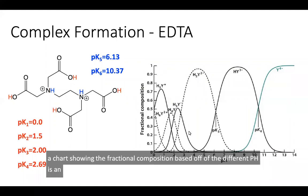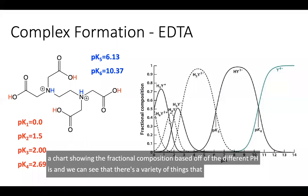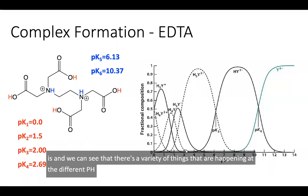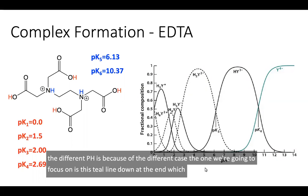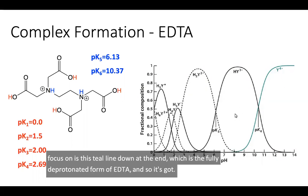We can see that there's a variety of things happening at the different pHs because of the different pKa's. The one we're going to focus on is this teal line down at the end, which is the fully deprotonated form of EDTA with the four minus charge on it.